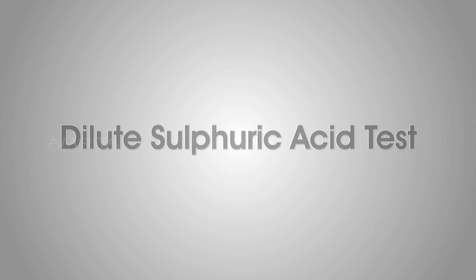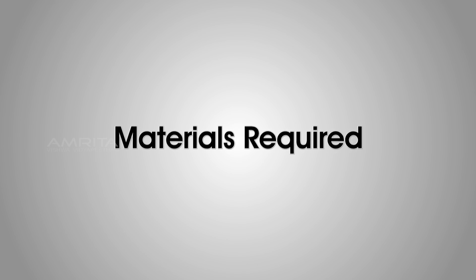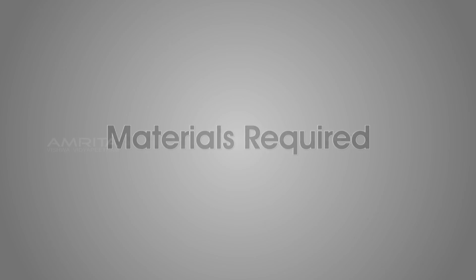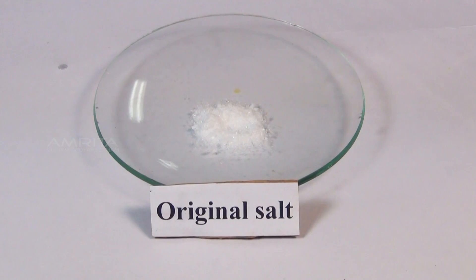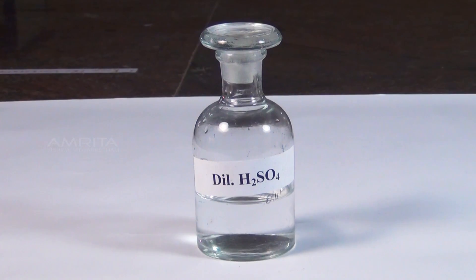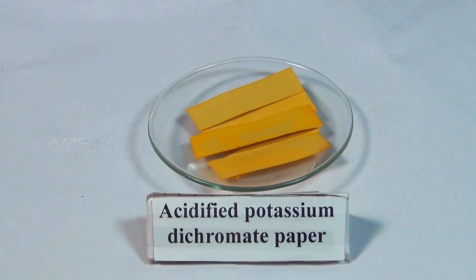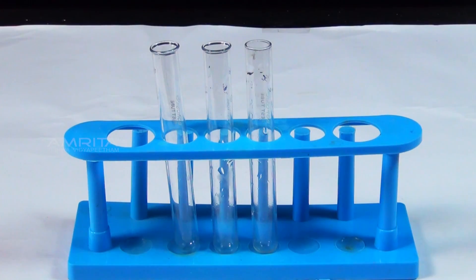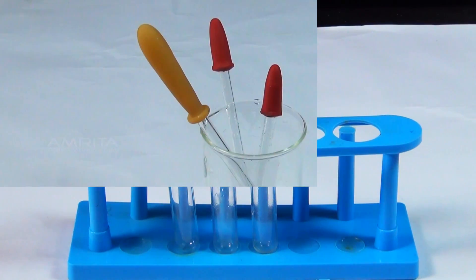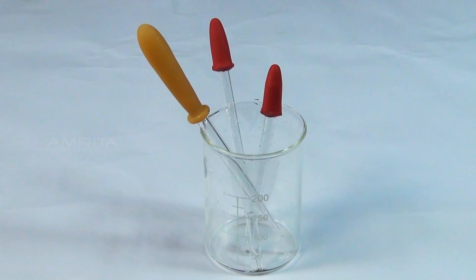Dilute Sulphuric Acid Test. Materials Required: Original Salt, Dilute Sulphuric Acid, Acidified Potassium Dichromate Paper, Test Tube, and a Dropper.